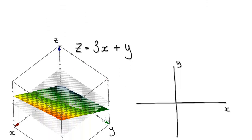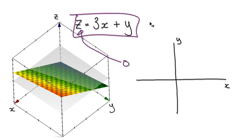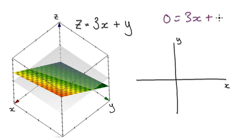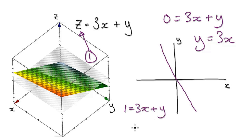Here's another example. If you punch this into a 3D graphical plotter it gives you this surface. To find the level curve, put z = 0 into the equation, so 0 = 3x + y. Making y the subject, at an elevation of zero you get a line with a gradient of -3. For a height of 1, substituting z = 1 gives 1 = 3x + y, which has the same gradient but an intercept of 1.